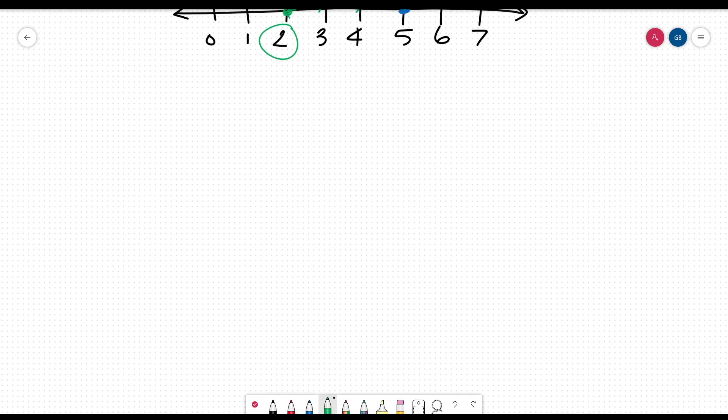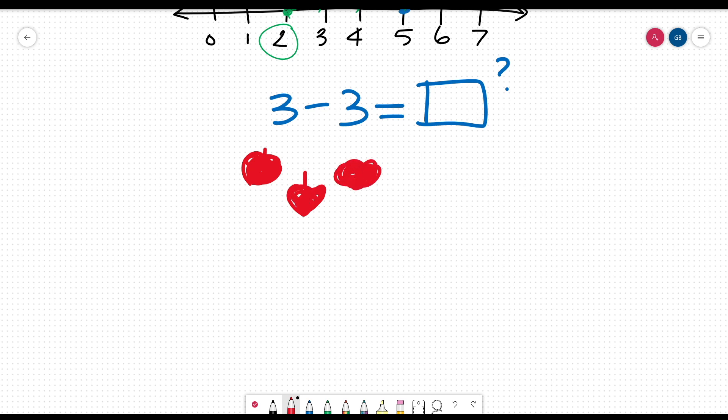Our next problem is 3 minus 3. Let's first use the apple way and draw out 3 apples, because that is our first number in this problem. Now we will look at the second number in the problem and remove that many apples. Here, the second number is a 3, so we have to remove 3 apples.